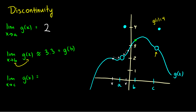What about the limit as x approaches c of g(x)? Taking points from the left and the right and getting closer to c, we see it approaches 3, even though g(c) is defined as 4. So once again, the limit is not equal to g(c) because there is a discontinuity there.